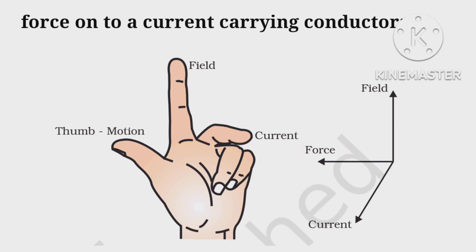The rule states: open your left hand palm, keeping four fingers in the direction of the magnetic field and the middle finger toward the current. Then the thumb gives the direction of force.